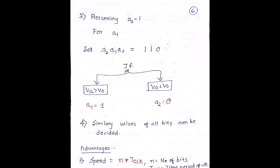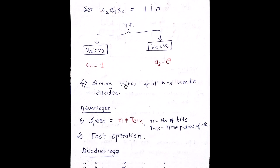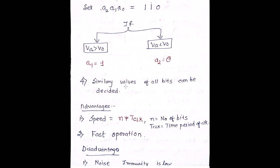Similarly, we can talk about A0 as well, and we can decide the values of all the bits A2, A1, A0. So what is the advantage of a digital to analog converter called SAR, Successive Approximation Register, is the speed. The speed of such kind of ADCs is very fast. It is N times T clock, where N indicates the number of bits and T clock is the period of the clock. So it is comparatively faster. But the noise immunity, it can get easily affected by noise. So that is the disadvantage of such kind of ADC.